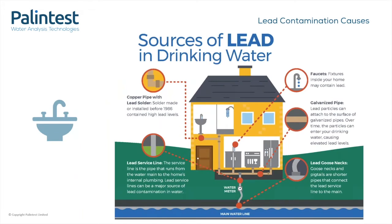So how does lead get into drinking water? The main way is through leaching from pipework. Lead has been used across Europe and the US for the pipes in the network that connect your home to the main water network. As the water passes through the lead piping, lead contamination particles are washed into the water from the corrosion of the piping itself. As shown on this image, there are many different points at which lead can be introduced into your home's water supply, from the service line to the fixtures and fittings within your home.